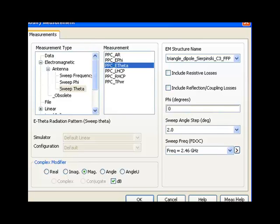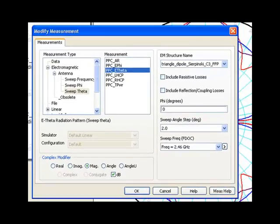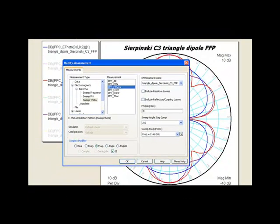We can do left-hand circular polarization, right-hand circular polarization, total power, axial ratio measurements. Pretty much all the standard measurements that you would want to make.